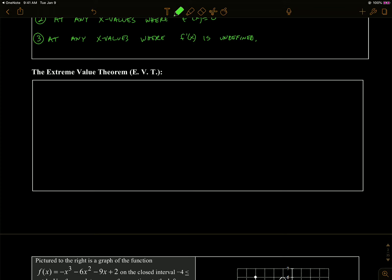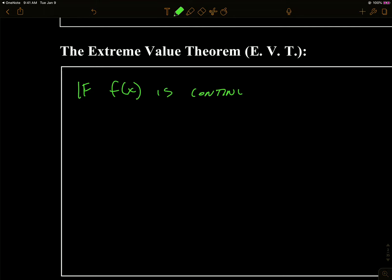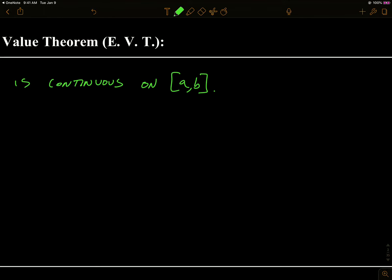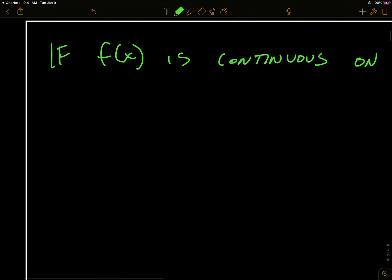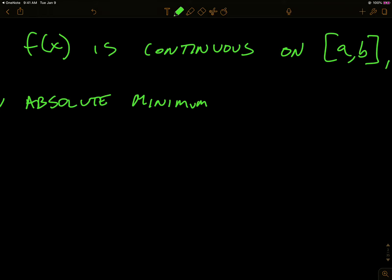And that's what the Extreme Value Theorem says. It's an existence theorem, just like the Intermediate Value Theorem. This theorem on its own does not tell you what the extreme value is — it just tells you that one of them exists at certain points. So: if f of x is continuous on the closed interval from a to b, then there exists an absolute maximum and an absolute minimum on that closed interval.